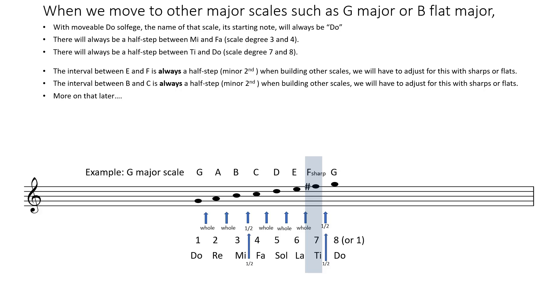As a result the distance from F sharp to G is a half step, and that's exactly what we need between 7 and 8 or Ti and Do. We'll cover this in greater detail later.